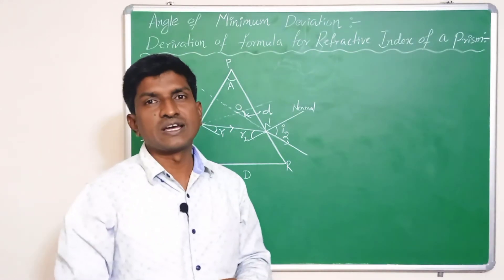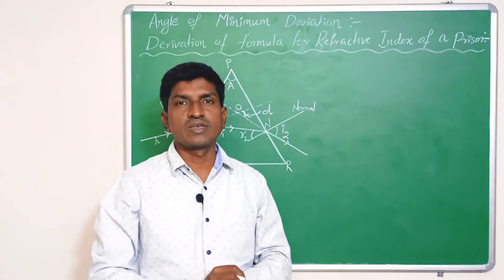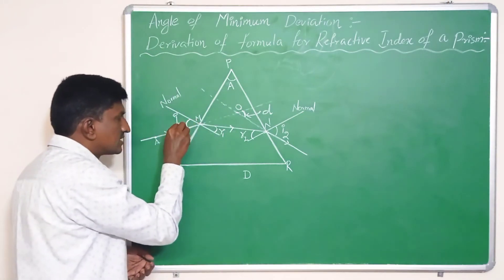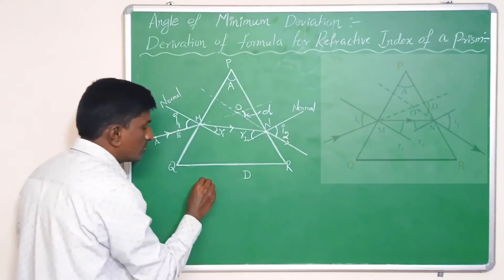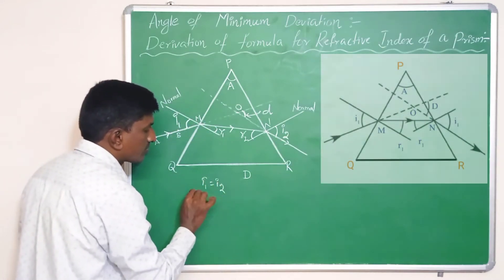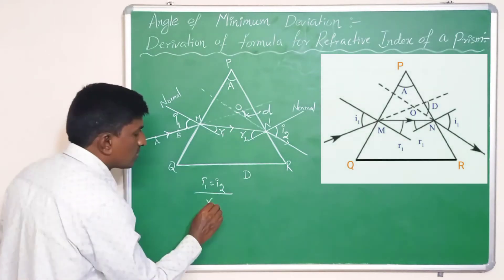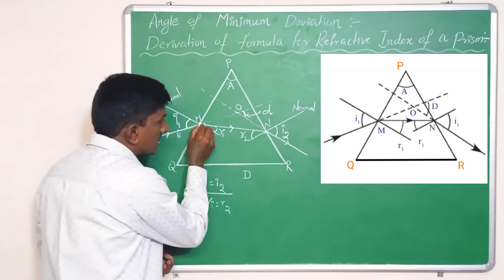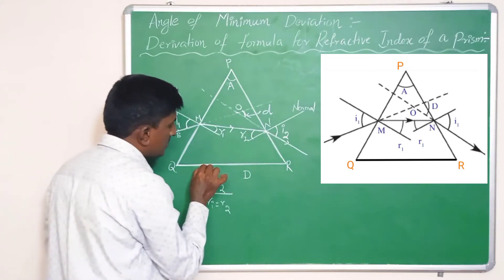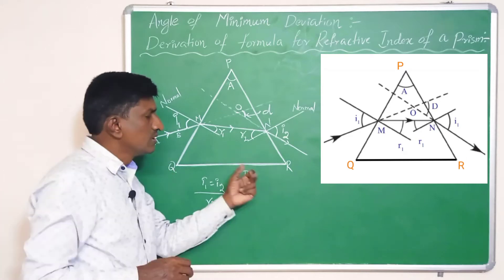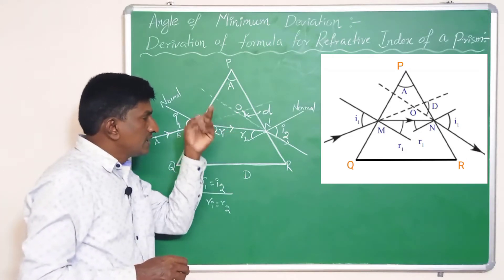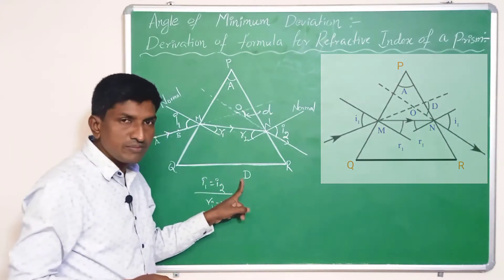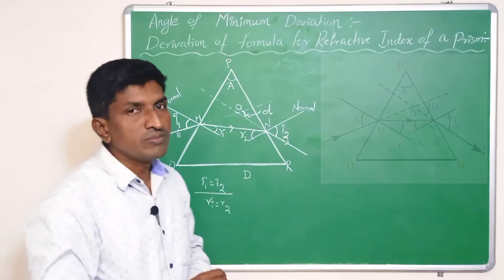What is the speciality of the angle of minimum deviation? Whenever the angle of deviation is minimum, the angle of incidence and the angle of emergence both become equal. Also, r1 equals r2. One more thing: the path of the light ray inside the prism is parallel to the base of the prism when the angle of deviation is minimum.